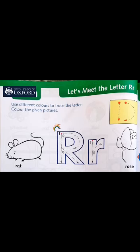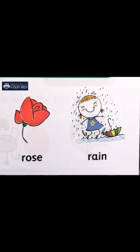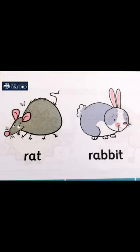You have to color the red and color the rose. Let's learn more vocabulary words together. Rose — it is a beautiful flower. Rain — the second word is rain. Rat — the third word is rat.